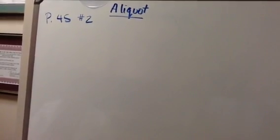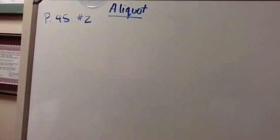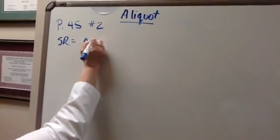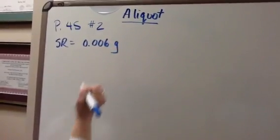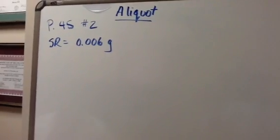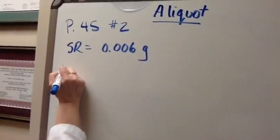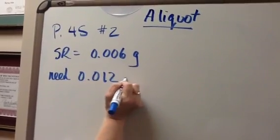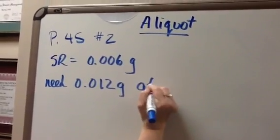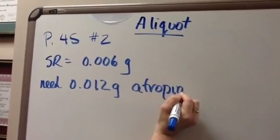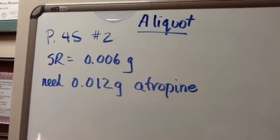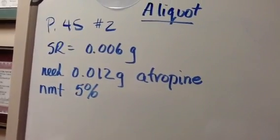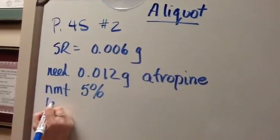If you read the problem, it says that you have a prescription balance that has a sensitivity requirement, SR is 0.006 grams. And it wants you to explain how you would weigh out 0.012 grams of atropine. And your error cannot be no more than 5%, and lactose is your diluent.